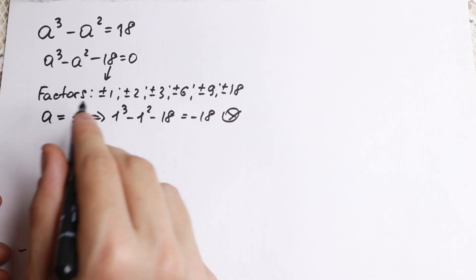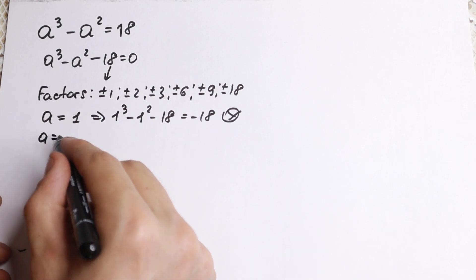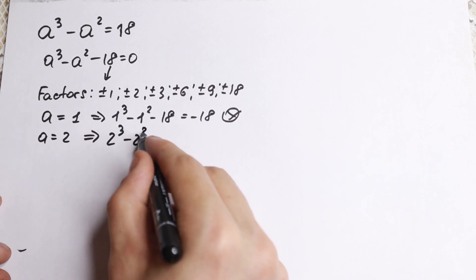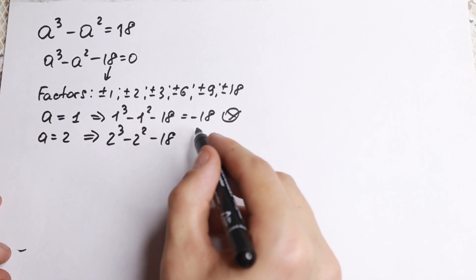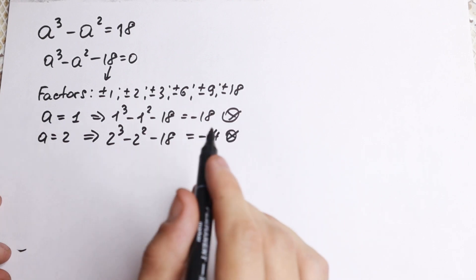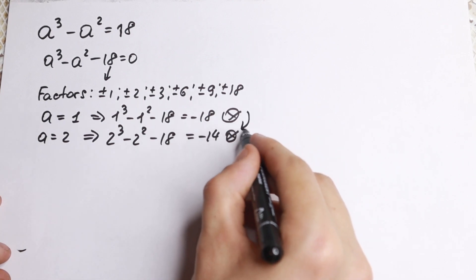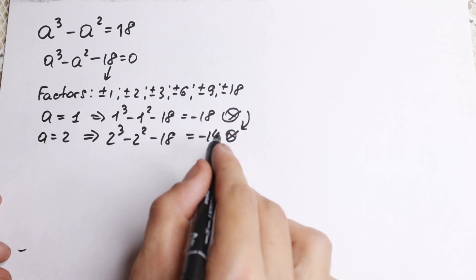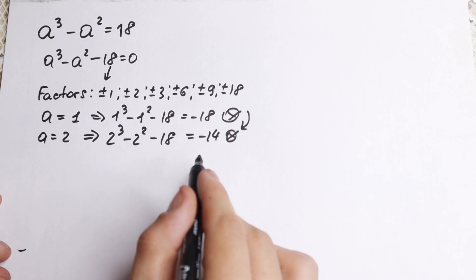Let's not check -1, let's check a higher one. We will have a = 2. We will have 2³ - 2² - 18. As a result, we will have -14, so not equal to 0. But if you can see, we're getting closer and closer to 0, and it's really good.